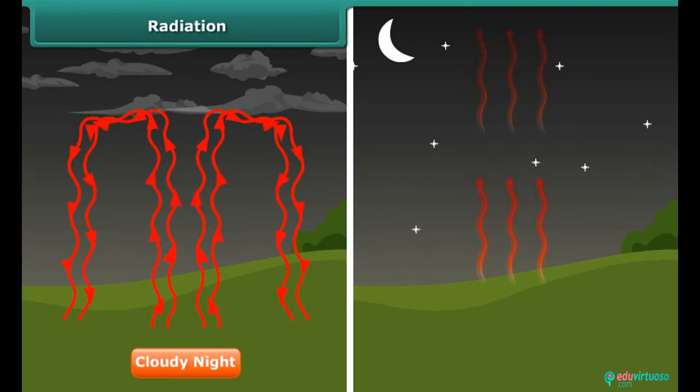A cloudy night is hotter than a clear night. When the sky is clear, the heat radiation goes into the atmosphere. But due to the presence of clouds in the sky, these thermal radiations are reflected back to the earth and one feels warmer.